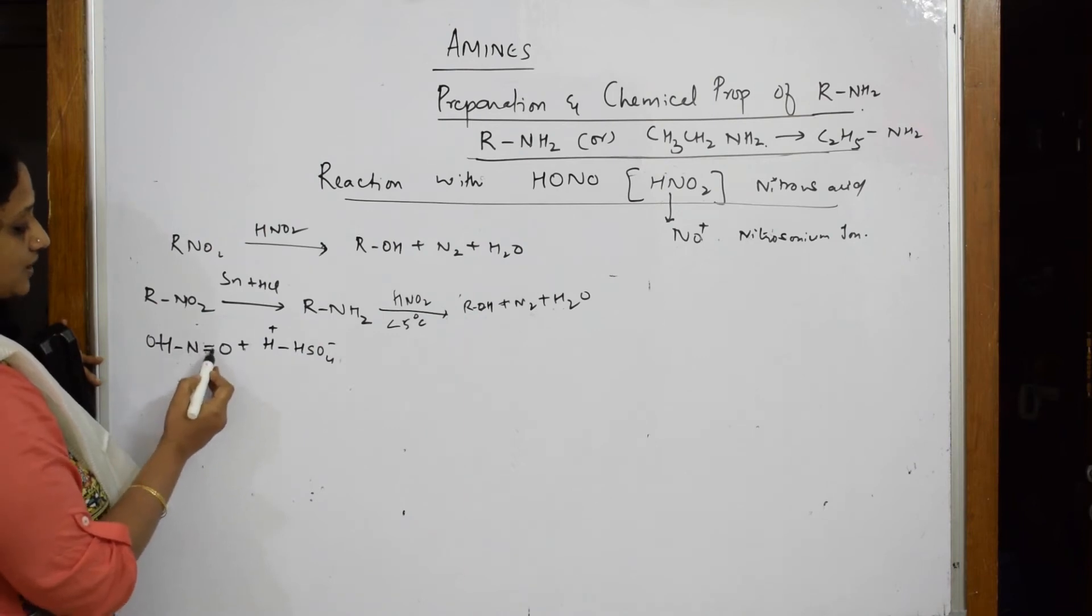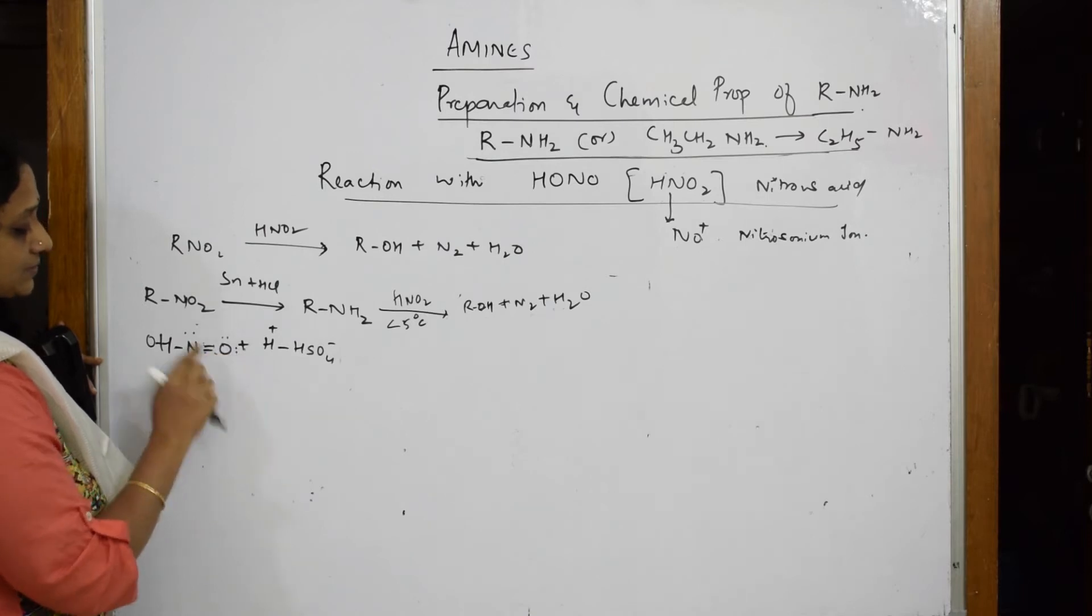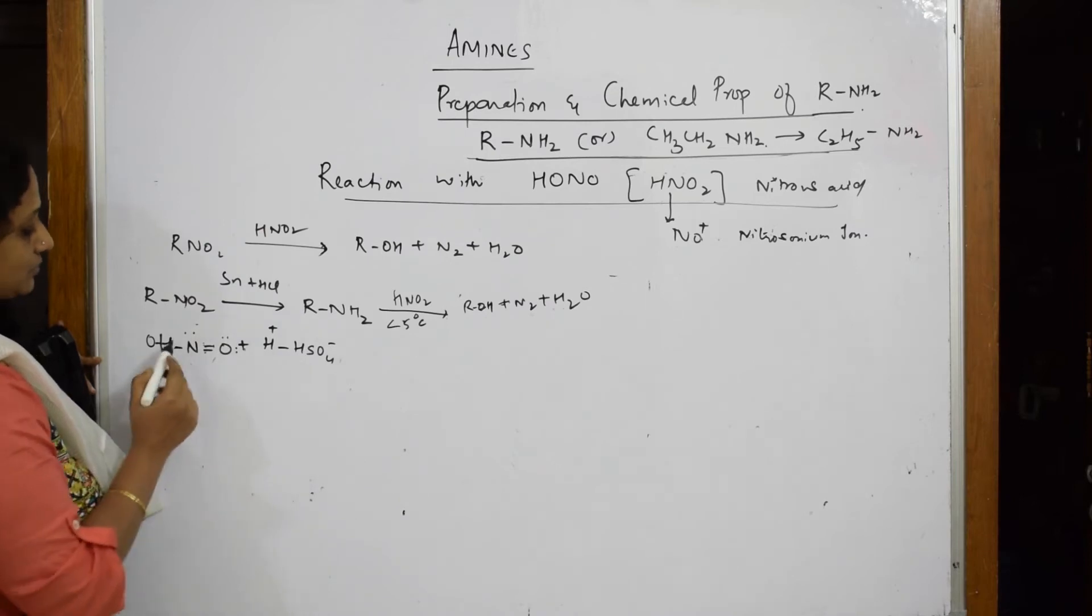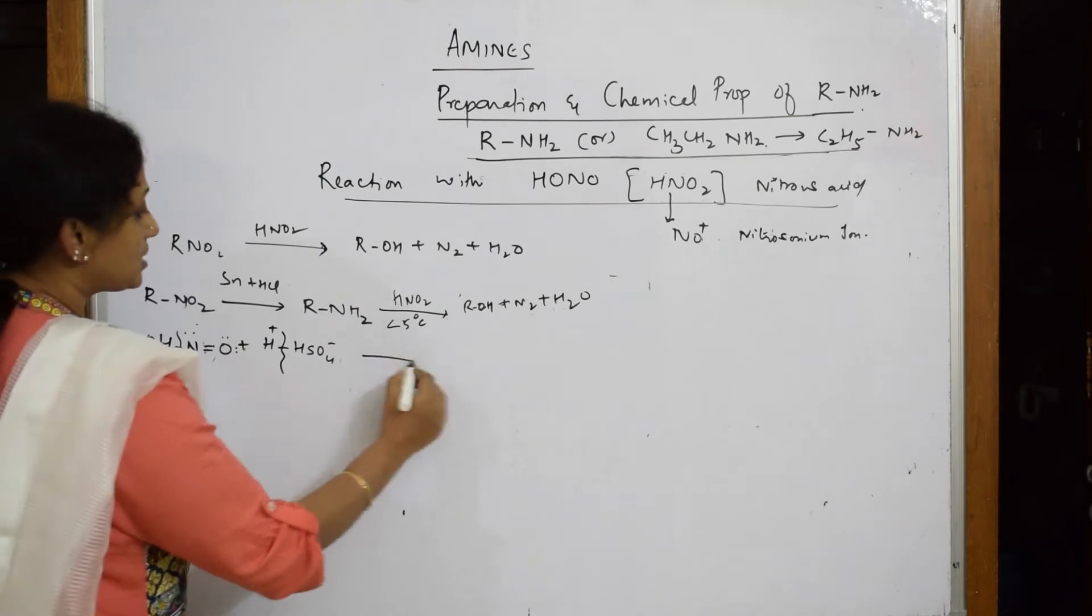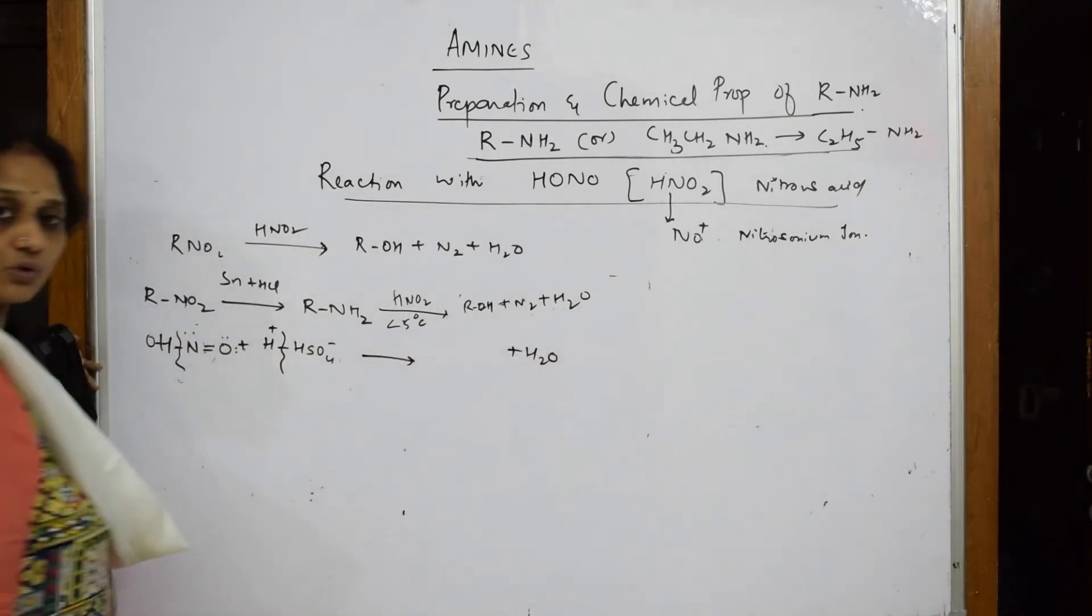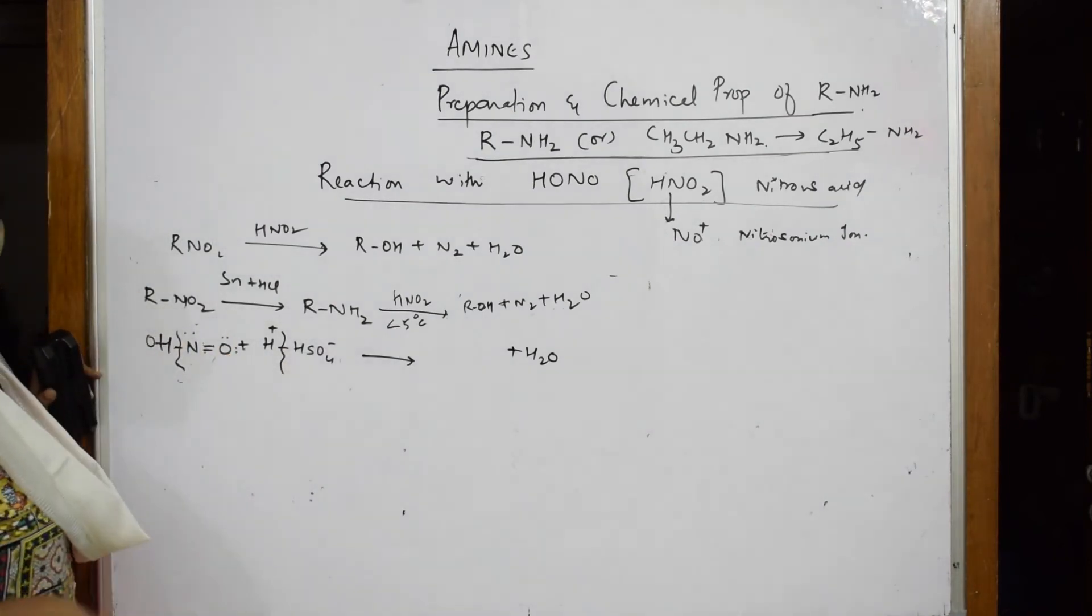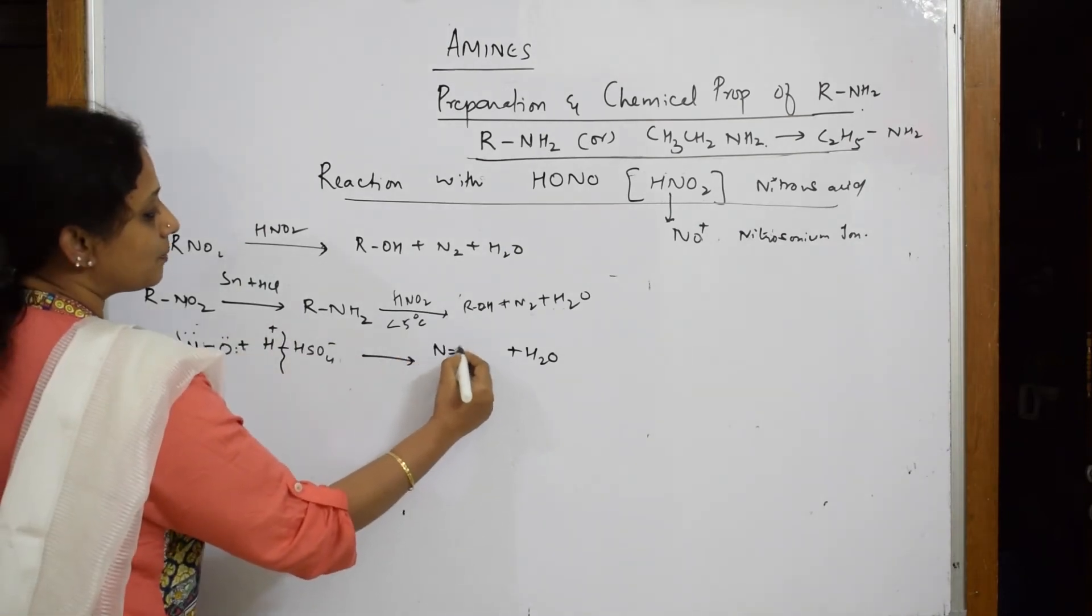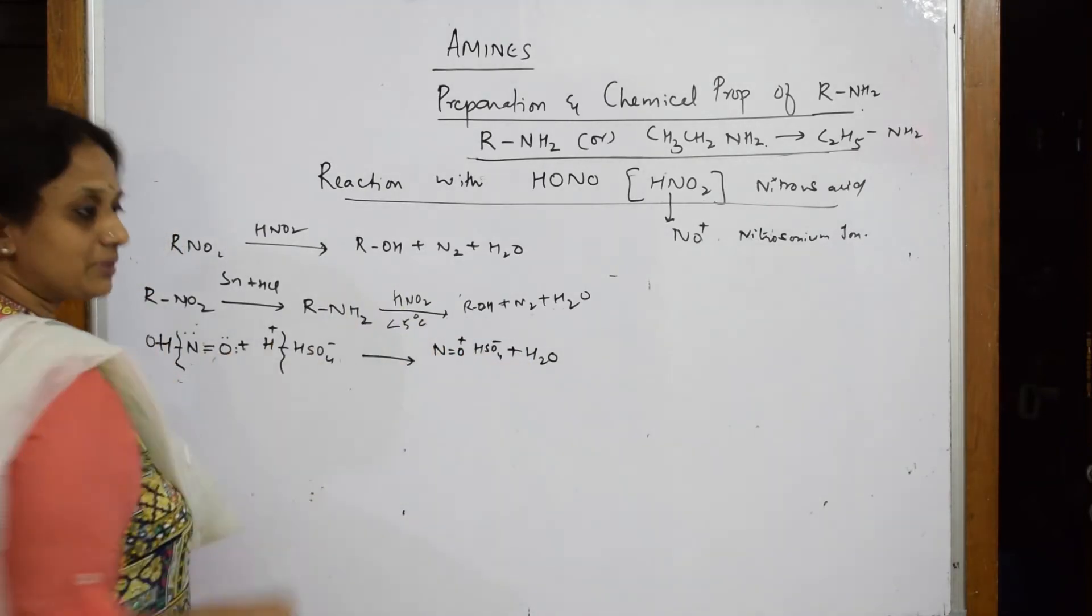When this combines in the acidic medium, there's a cleavage of the bond here and cleavage of the bond here also. What does this form? This is going to combine together to release water. I'm left with this cation and this anion. This is your nitrosonium cation. That nitrosonium cation is like this: NO+ and HSO4-. Now observe, your nitrosonium cation is going to combine or react with your R-NH2.